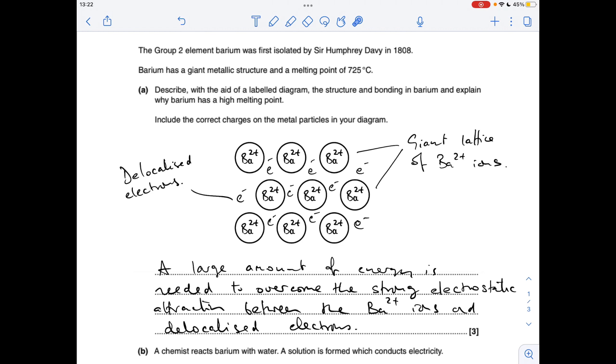Okay, so part A, the diagram for metallic bonding in barium. So we need to have a lattice, a regular arrangement of Ba2+ ions. I always draw three rows of three and offset the middle row. They need to be labeled up, and we need to dot some electrons around in the spaces and label them as delocalized electrons.